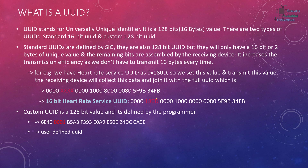UUID stands for Universally Unique Identifier, and it's a 128-bit or 16-byte value. There are two types of UUIDs available: the first one is the standard UUID, which is a 16-bit UUID, and a custom UUID which is defined by the users.